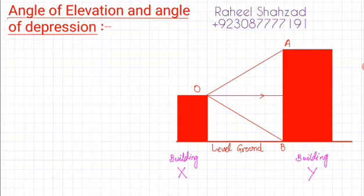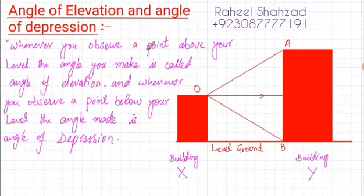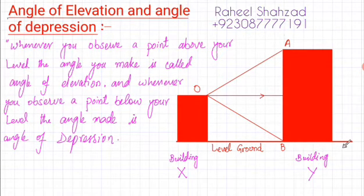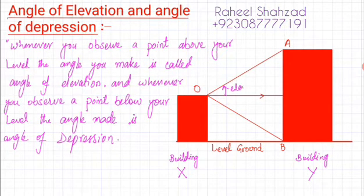Remember, angle of elevation is when you observe a point above your level — the angle you make is called angle of elevation. Whenever you observe a point below your level, the angle you make is called angle of depression. You are standing at the top of building X. This is the level ground — both buildings stand on it — and this horizontal line is parallel to the ground.